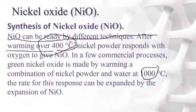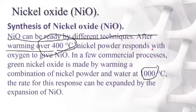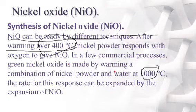Upon heating above 400 degrees Celsius, nickel powder reacts with oxygen to give NiO. In some commercial processes, green nickel oxide is made by heating a mixture of nickel powder and water at 1000 degrees Celsius. The rate of this reaction can be increased by adding certain additives.